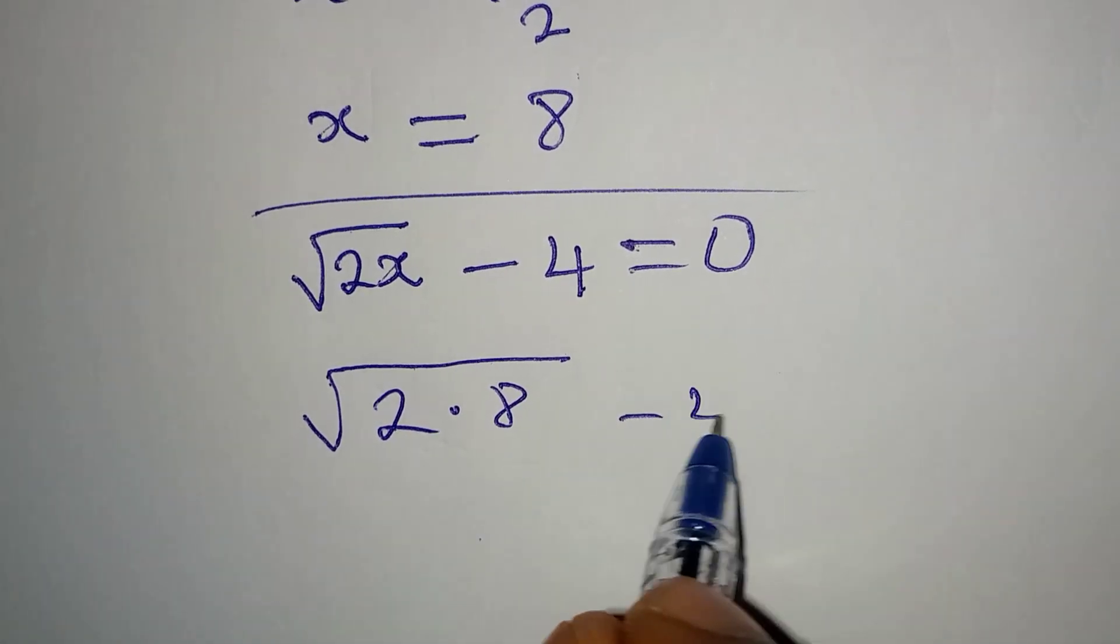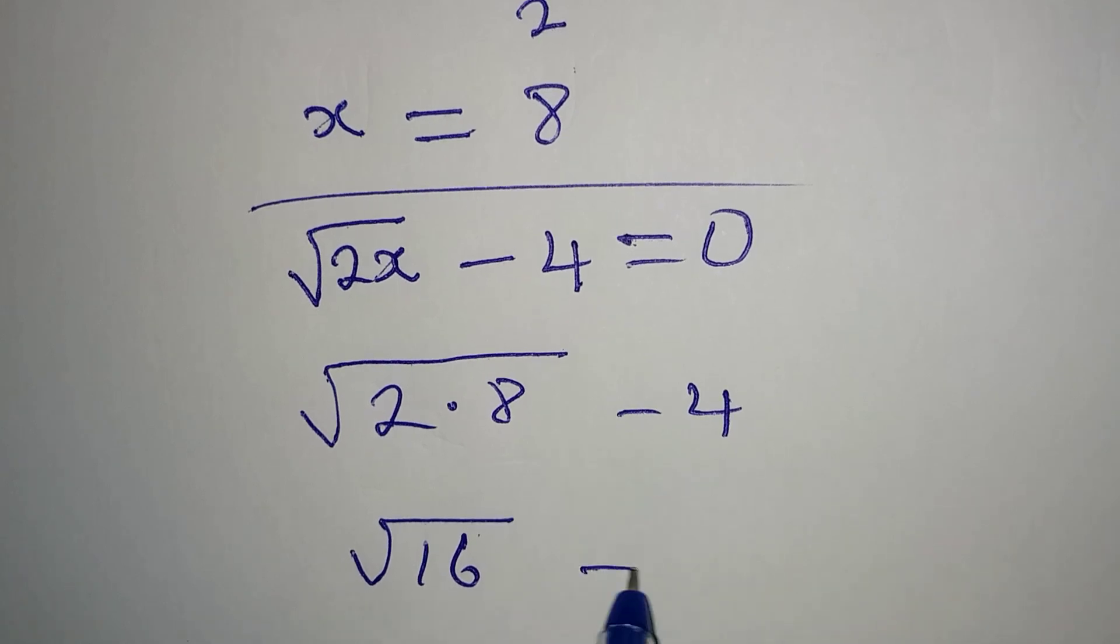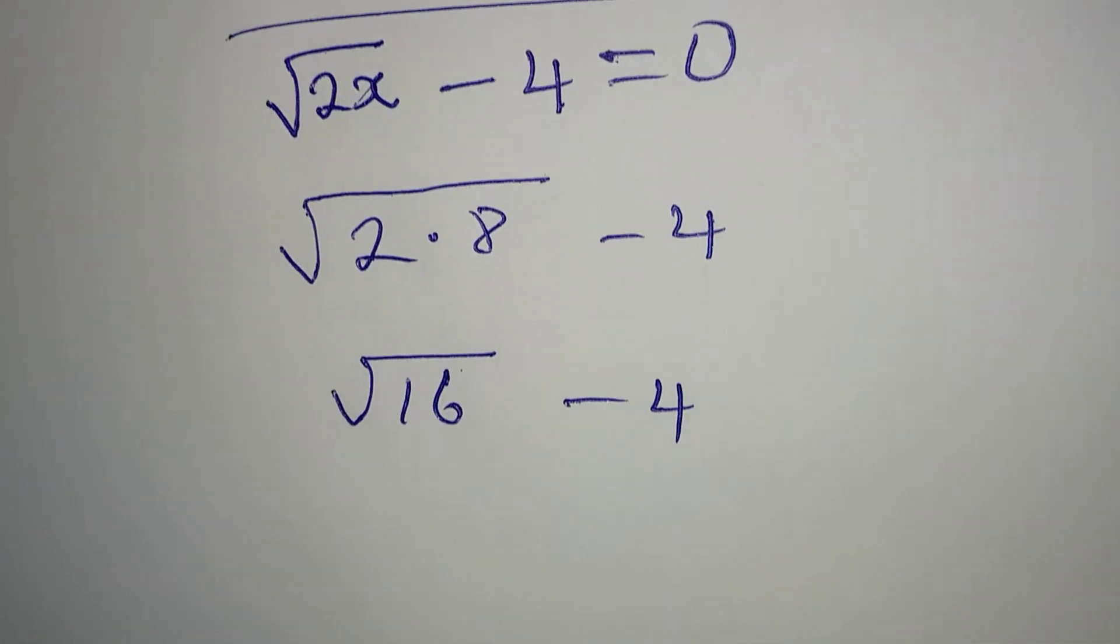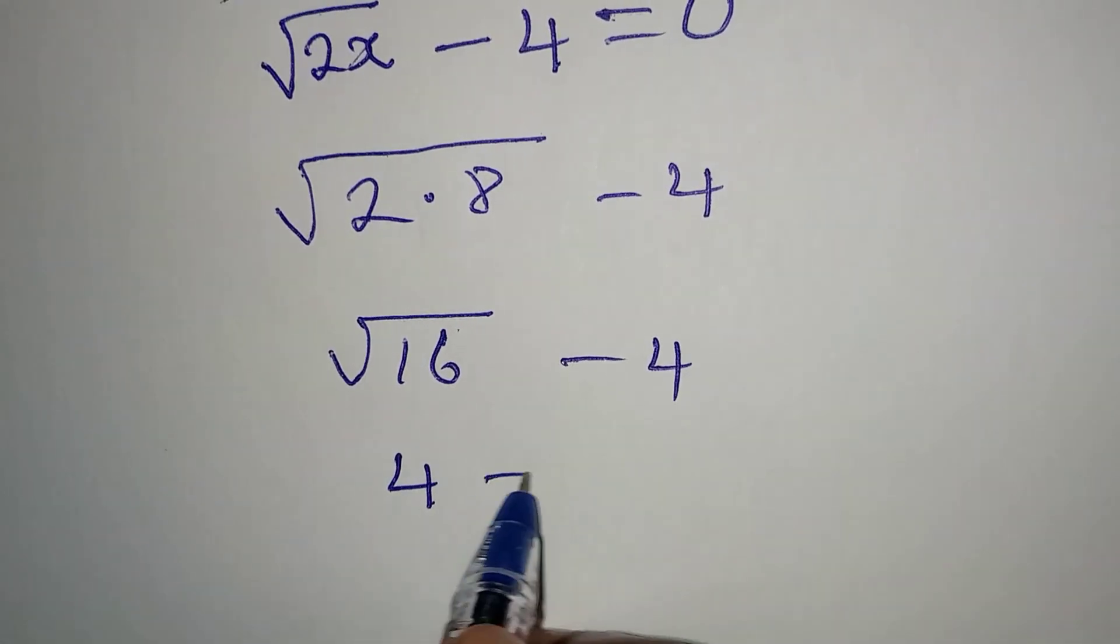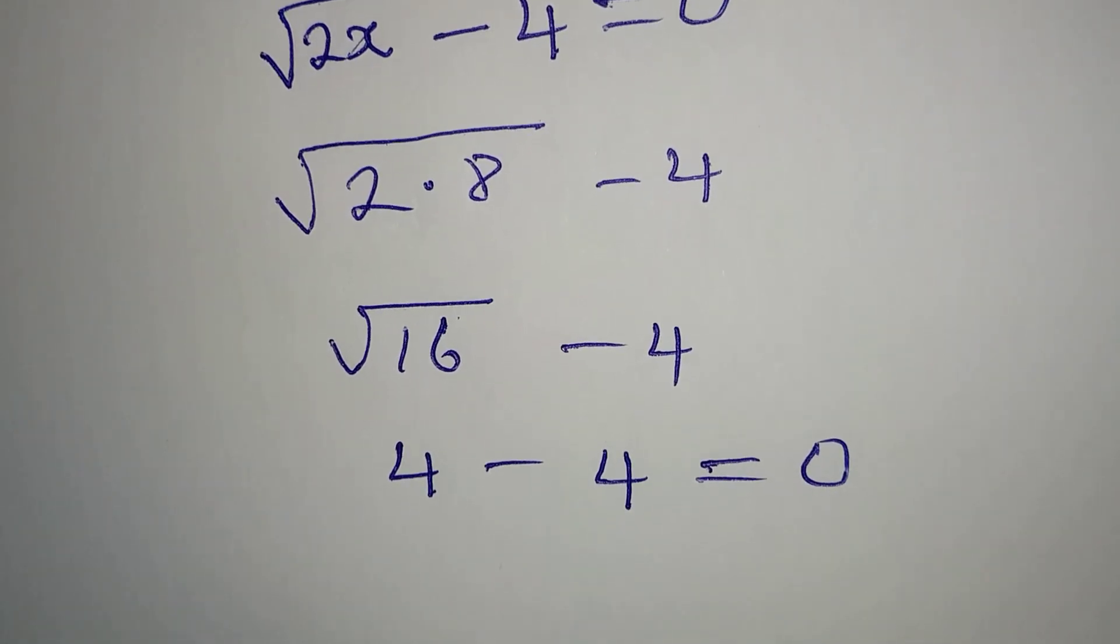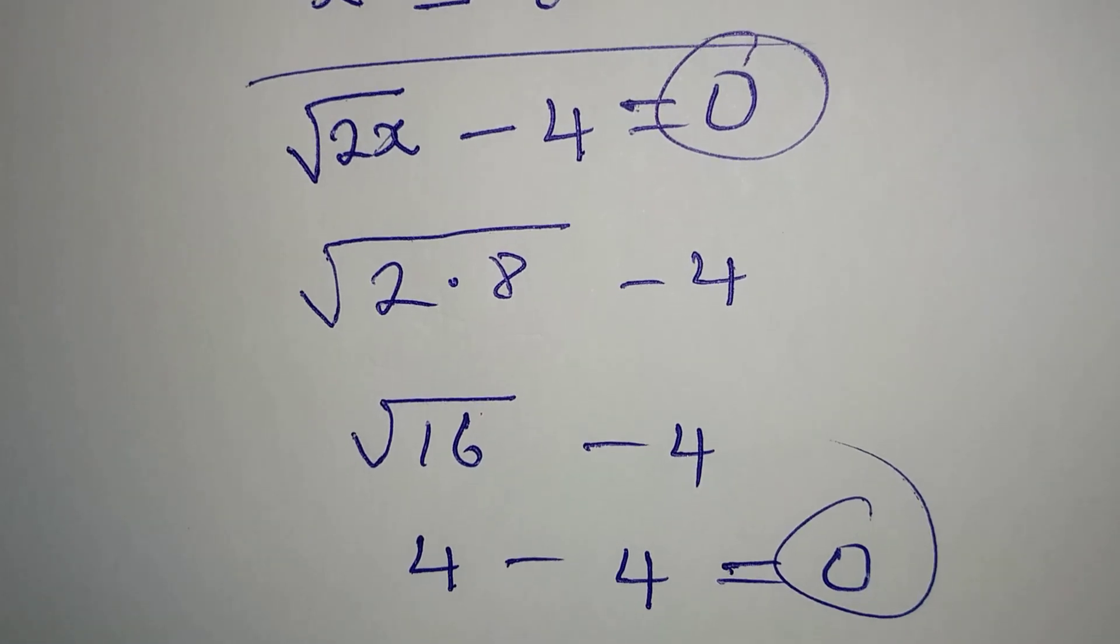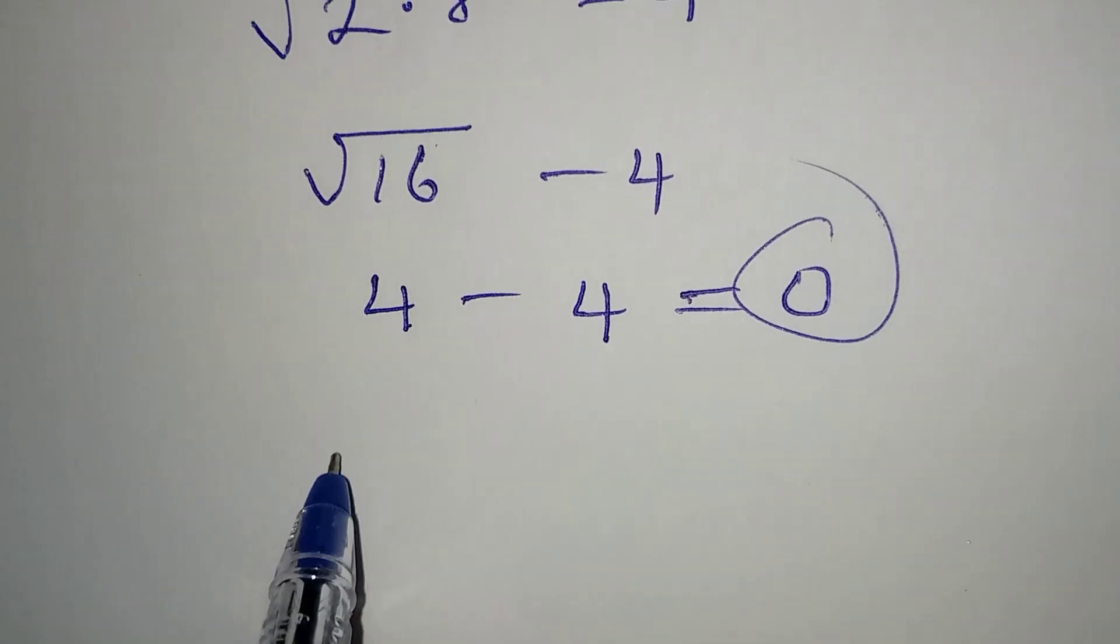2 times 8 is 16, minus 4. Square root of 16 is 4, minus 4, and this is equal to 0. That means we are correct because we have 0 on the right. This is to confirm that x is equal to 8.